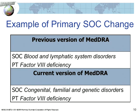Here is an example of a primary SOC allocation for PT factor VIII deficiency being corrected through the change request process. In an earlier version of MedDRA, its primary allocation was to SOC blood and lymphatic system disorders, but since this is an inherited condition, the primary SOC allocation was corrected and changed to the congenital SOC with a secondary link to SOC blood and lymphatic system disorders.